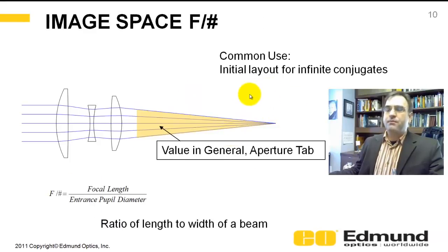Image space F number. And where is this used? This is used if you've got an initial layout for an infinite conjugate, and you know your F number. You can just specify, I want the value in the aperture tab. The general aperture tab, I want an F2 system. This is considerably slower, probably F5.